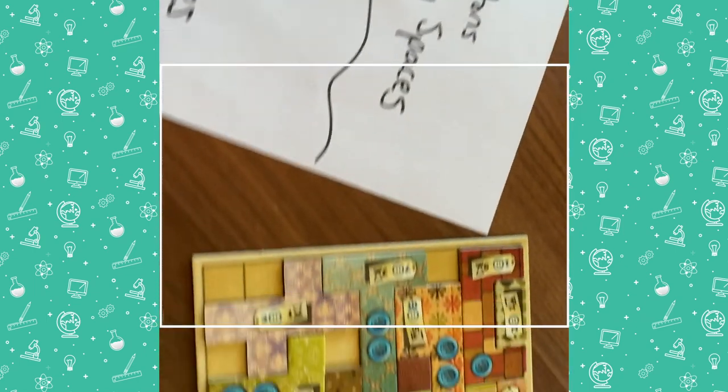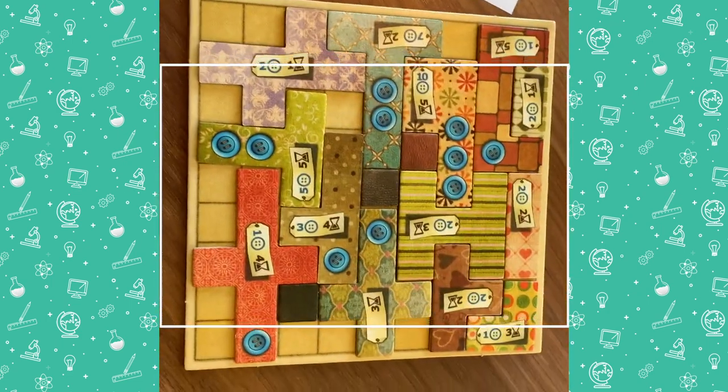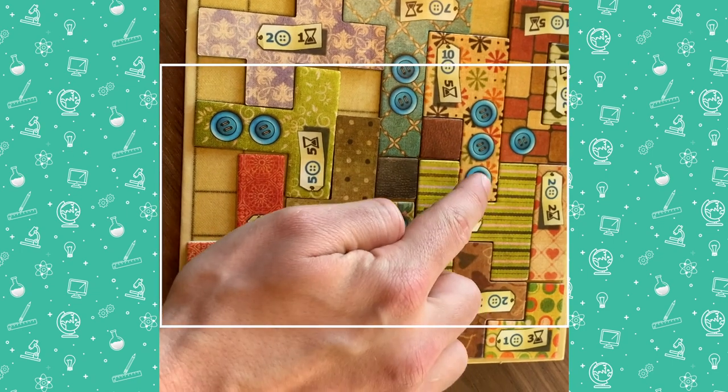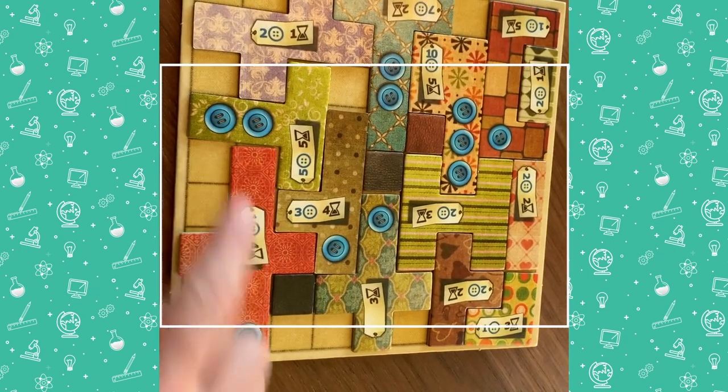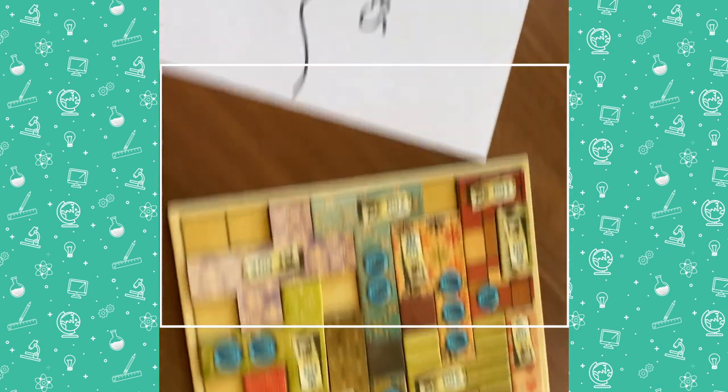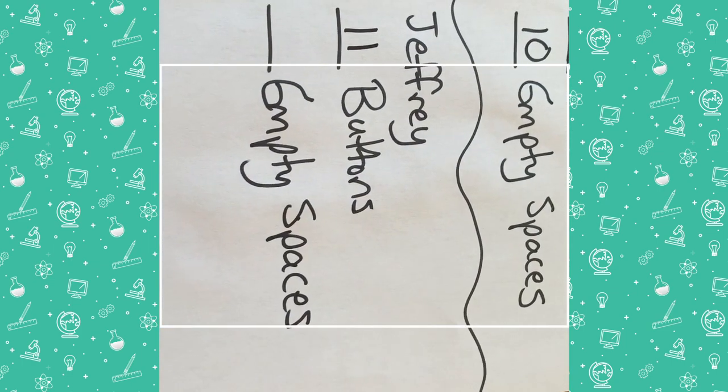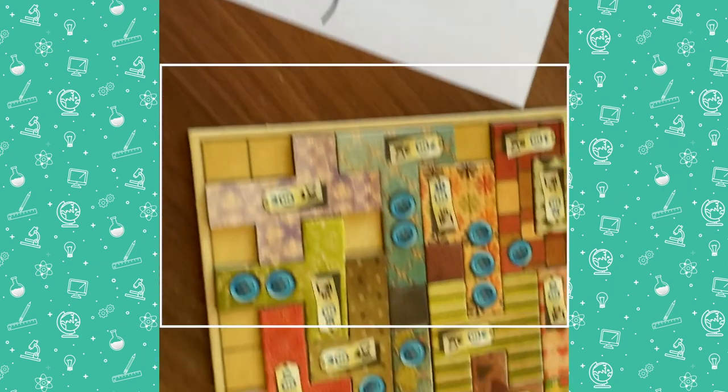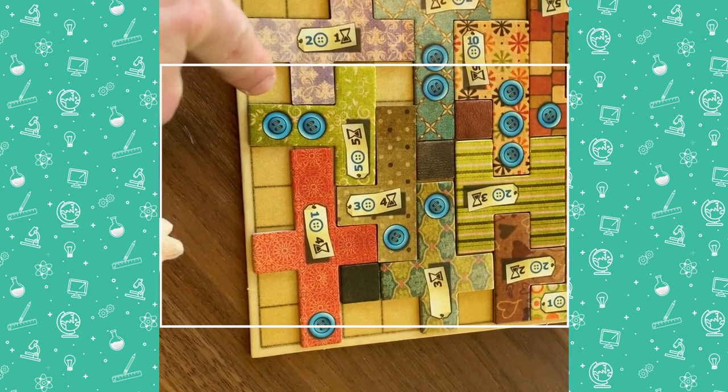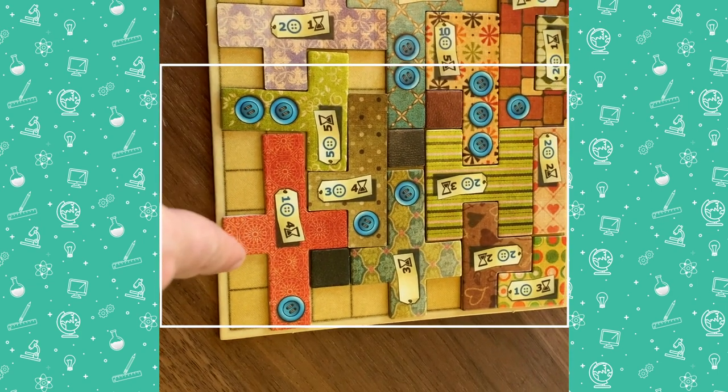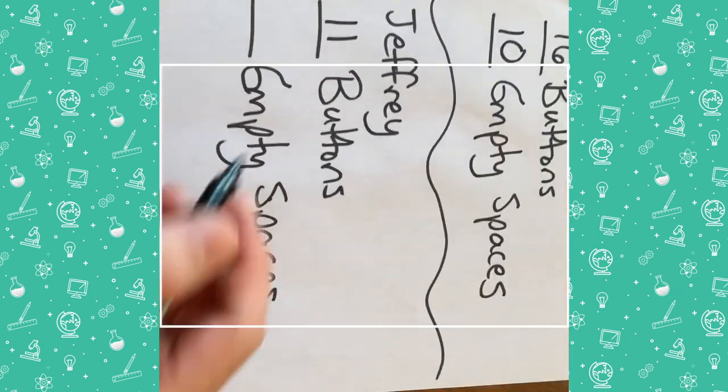All right, let's see what Jeffrey got. How you doing Jeffrey? Okay, good. 1, 2, 3, 4, 5, 6, 7, 8, 9, 10, 11 buttons. Not quite as many as Frida but the empty spaces make a big difference too. Let's see how many empty spaces he got. 1, 2, 3, 4, 5, 6, 7, 8, 9, 10, 11, 12. 12 empty spaces.